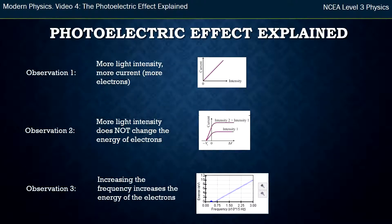So let's see if we can explain these same observations using this light packet or energy packet idea. So the first one, more light intensity gave us more electrons being fired off. So with these photons, brighter light or more intensity just means more photons coming out. If there's more photons, there's more photons hitting electrons and there's more electrons coming out. That makes sense.